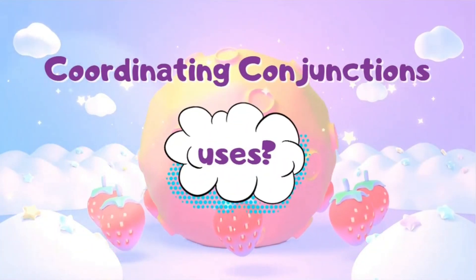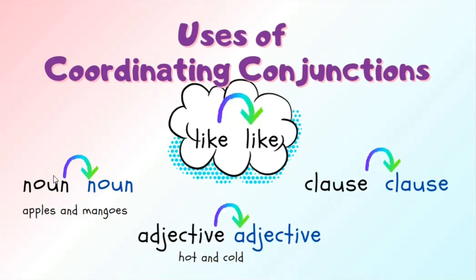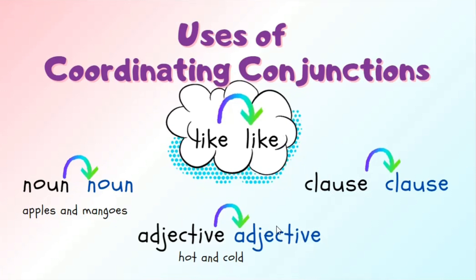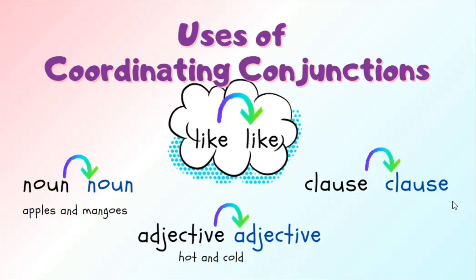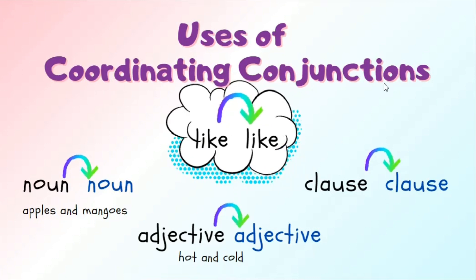The main purpose of coordinating conjunctions is connection. But what do they connect? They can connect like to like. It means that coordinating conjunctions can connect noun to noun, like apples and mangoes; adjective to adjective, like hot and cold; and clauses to clauses. If you don't know what clauses are, just write it in the comment box and I will surely make a video around this topic. But I will give you a little insight about clauses in this video as well.